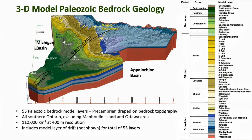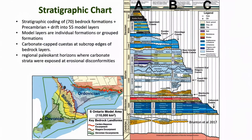This is a regional view of the new 3D Paleozoic bedrock geological model showing the bedrock formations coded in different colors with the legend for these formations down the side. There are 53 Paleozoic bedrock layers represented, plus the Precambrian, with the surficial geology stripped off. This is a stratigraphic chart of the Paleozoic bedrock formations in Southern Ontario, used to guide the stratigraphic coding of model layers.